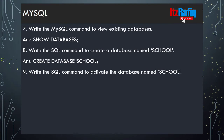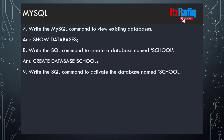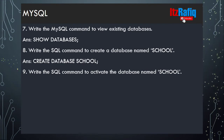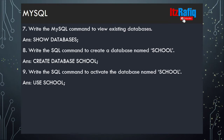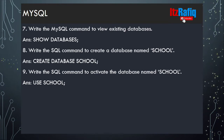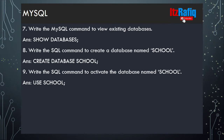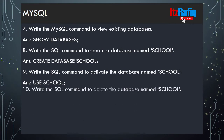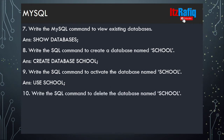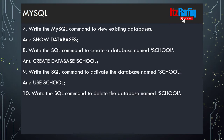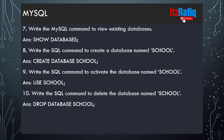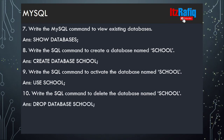Number nine: write the SQL command to activate the database named school. It will be USE school. Similarly, to use company it will be USE company. Write the SQL command to delete the database named school — the answer will be DROP DATABASE school.